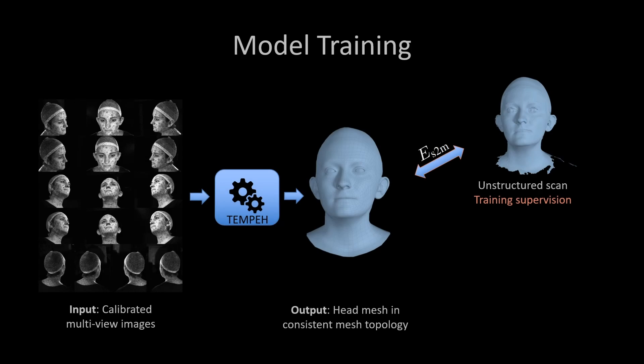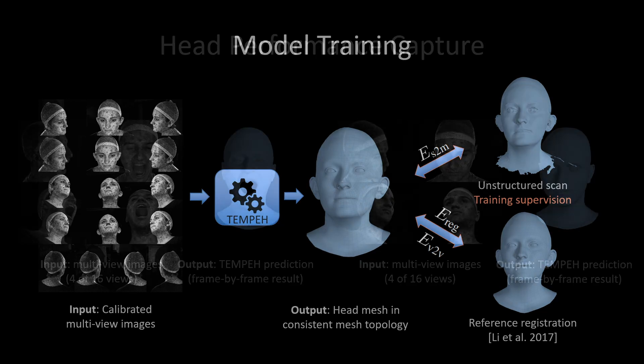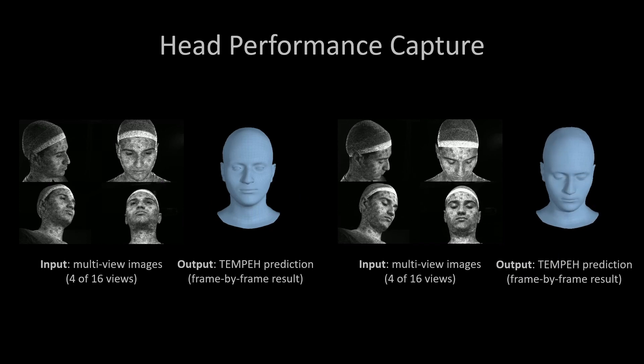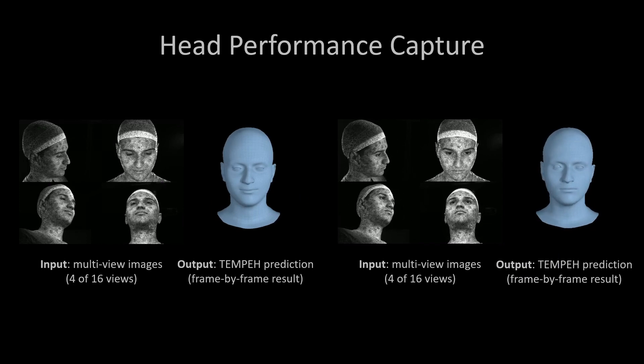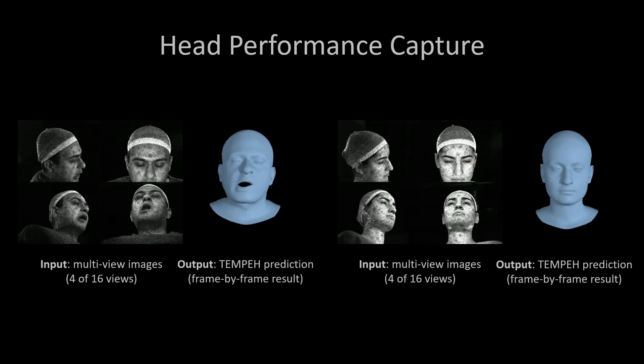During training, we directly minimize the distances between TEMPER-inferred heads and unstructured multi-view stereo scans. Solely optimizing the distance to the scans results in poor predicted head meshes with overlapping and self-intersecting faces. To prevent this, we add registration meshes as supervision for pre-training and regularization. Once trained, TEMPER requires no scans or registrations as input, but instead directly predicts 3D heads in correspondence from the multi-view images.